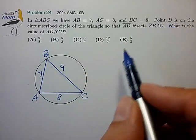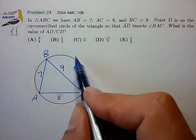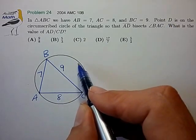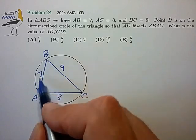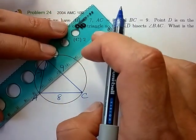Now, we have point D, excuse me, on the circle such that AD bisects angle BAC. So, let's just eyeball that and draw that in.